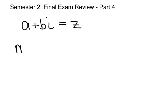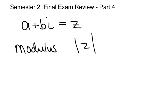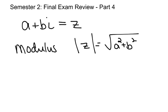The modulus, which was also the absolute value of the complex number, was just the square root of a squared plus b squared. That looks like a familiar formula — it almost looks like the Pythagorean theorem.